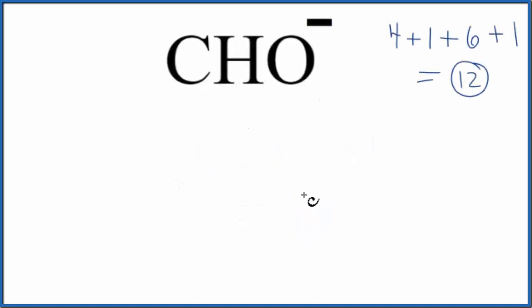We'll put the least electronegative element at the center of our Lewis structure. So we'll put the carbon here. Hydrogen always goes on the outside, so we'll put that there. And then we have our oxygen atom. We'll put electrons between atoms, and that's going to form our chemical bond. So we've used four. We have a total of 12.